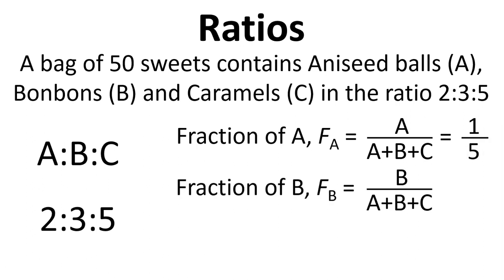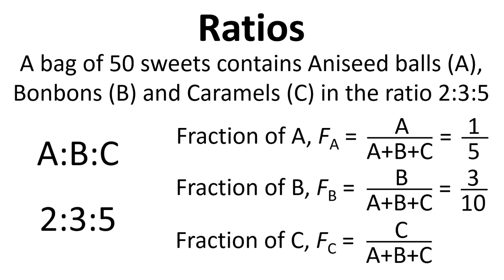Fraction of B works the same way except it's B divided by this total here, A plus B plus C. So it's three over ten. Fraction of C is again, it's the number C from the ratio divided by the total which is five over ten and that simplifies to a half.